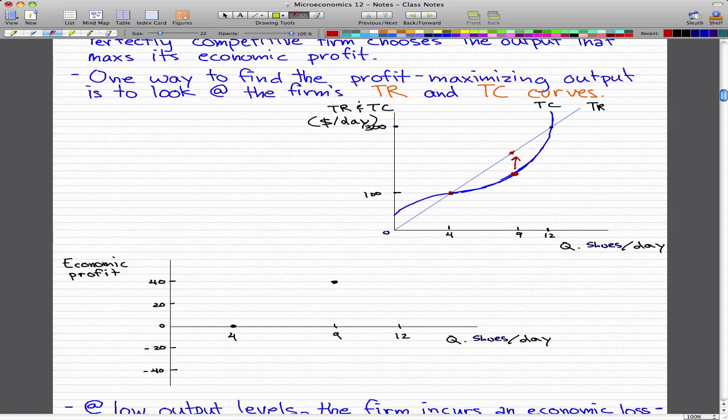So let's just say for arbitrary numbers to make this easy that this is $240 of total revenue per day, and the total cost is $200. So in that case, $240 minus $200 is $40 of economic profit per day.